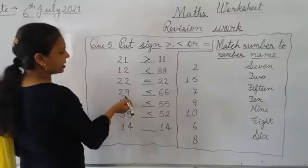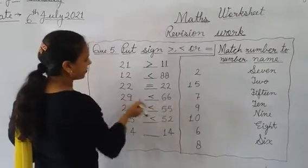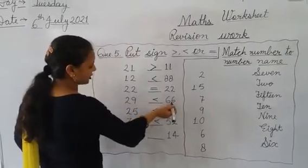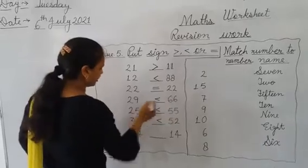Next. 29 and 66. We will put sign greater in front of 66 because this is greater than this.